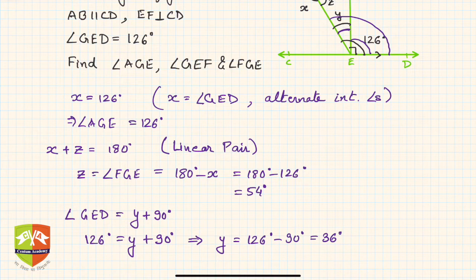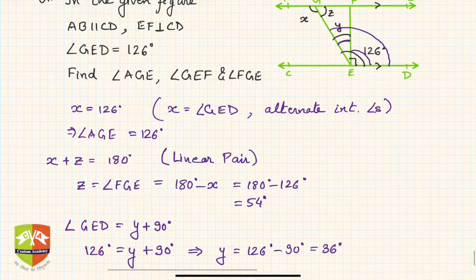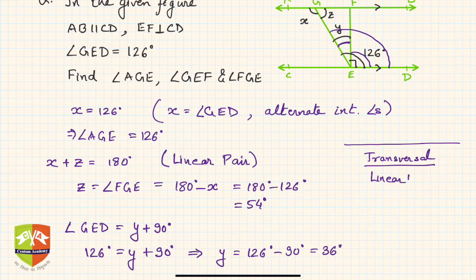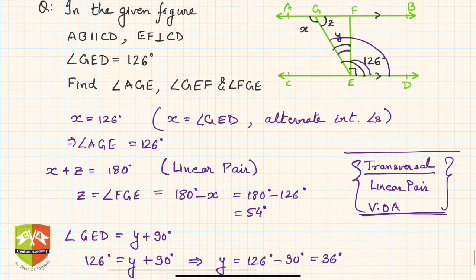So what is the learning from this sum? You must know all the angles related to transversals, then linear pairs and vertically opposite angles. If you know all these lines and angle concepts, you'll be able to solve any such sum. Please keep this in mind.